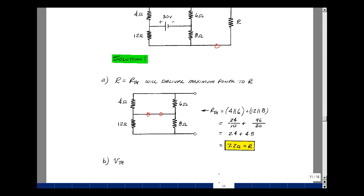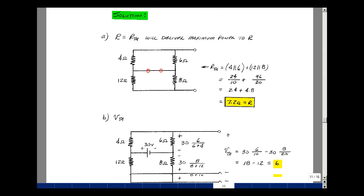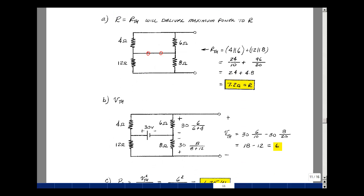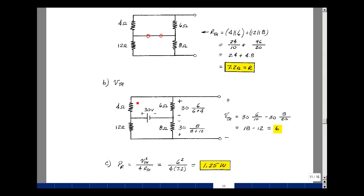Now let's also find the amount of power that's dissipated in R. And we could do that also by finding the Thevenin voltage. Now since the current in the 4 ohm and the 6 ohm is the same, and the current in the 12 ohm and the 8 ohm is the same, we could use the voltage divider rule.